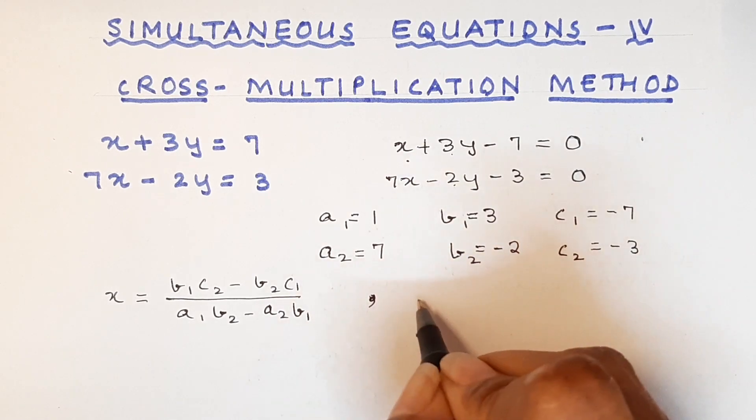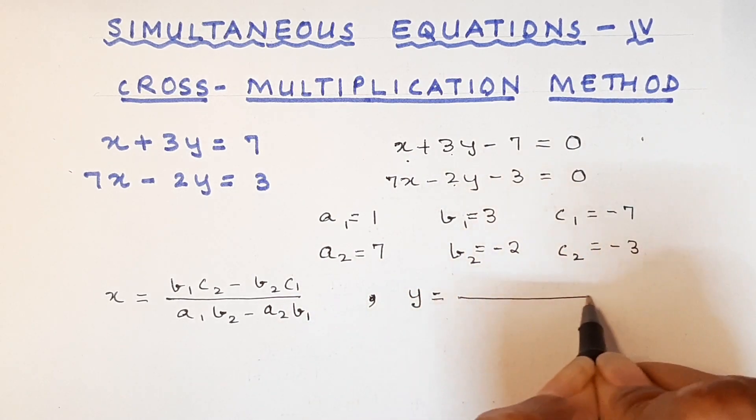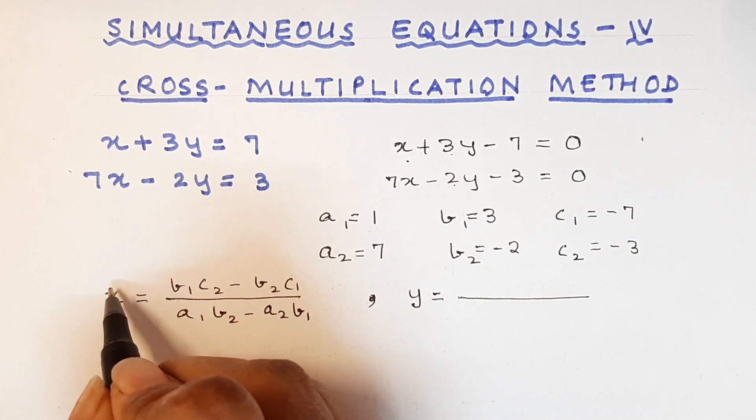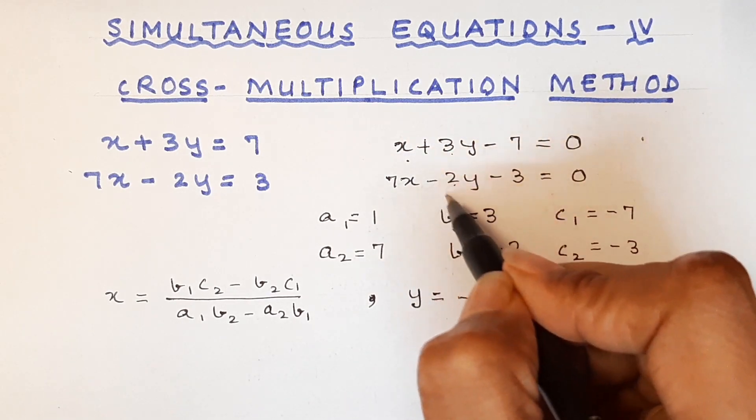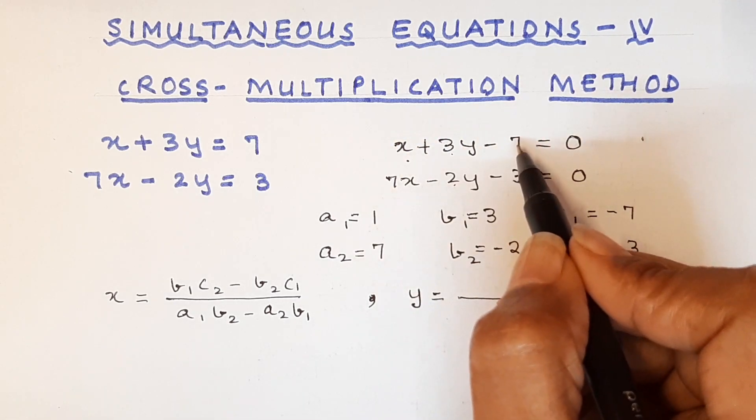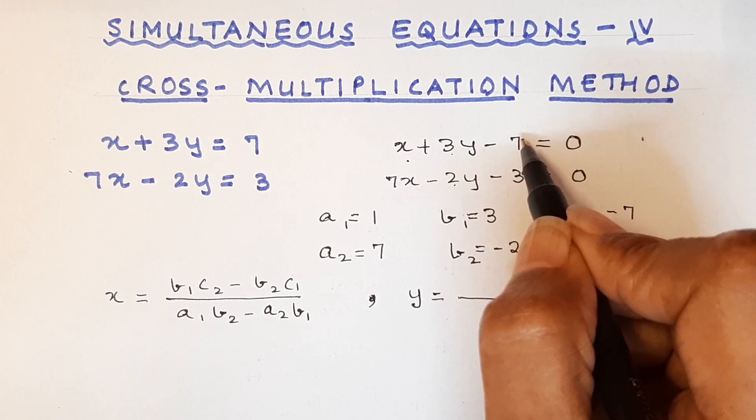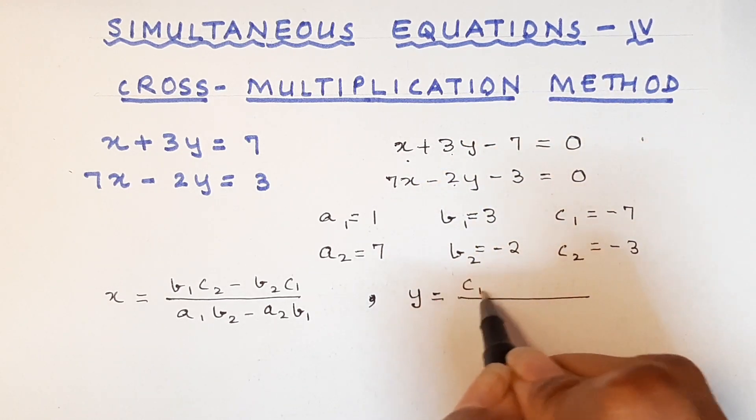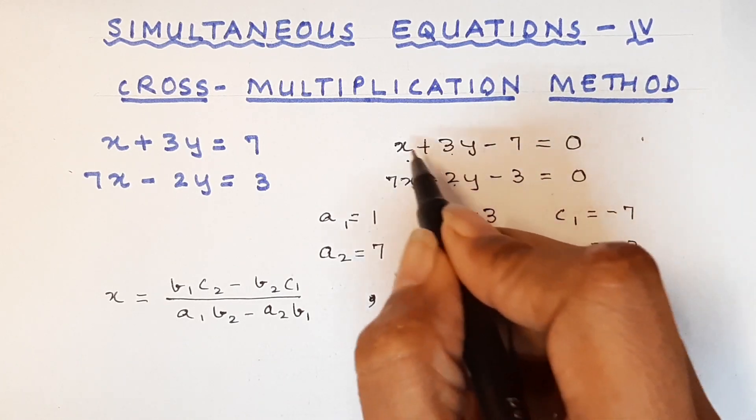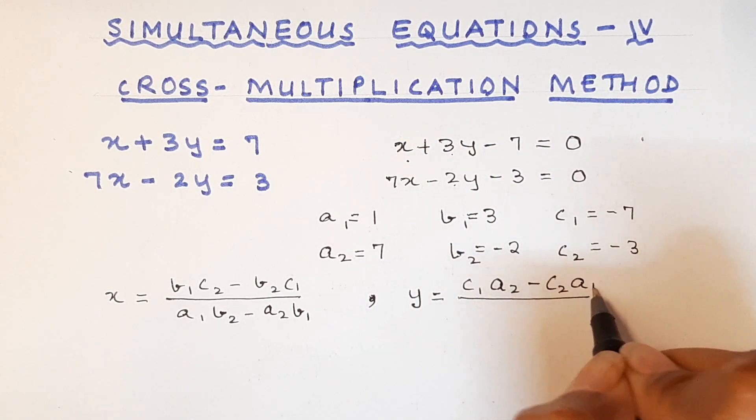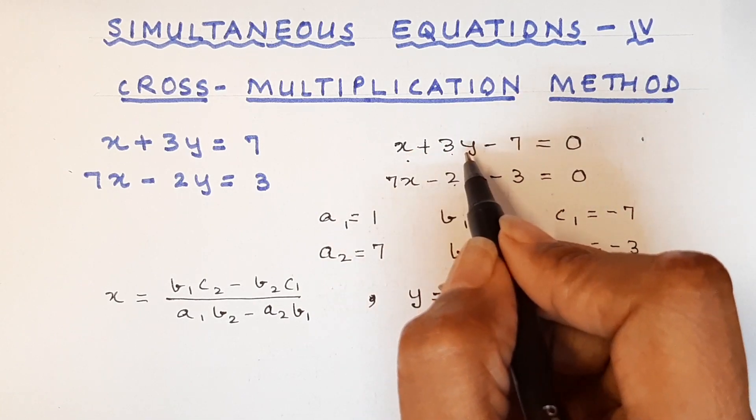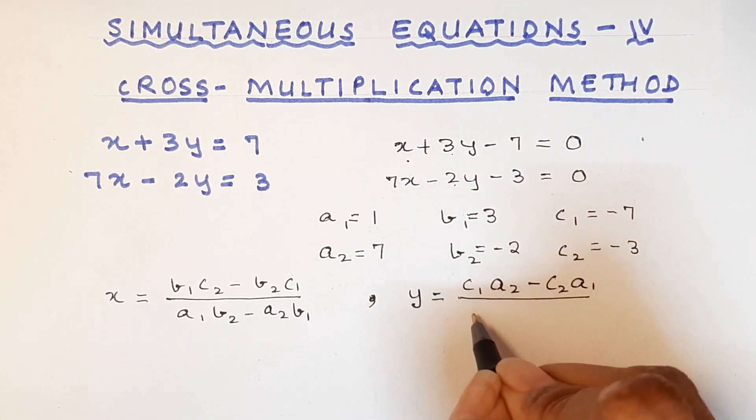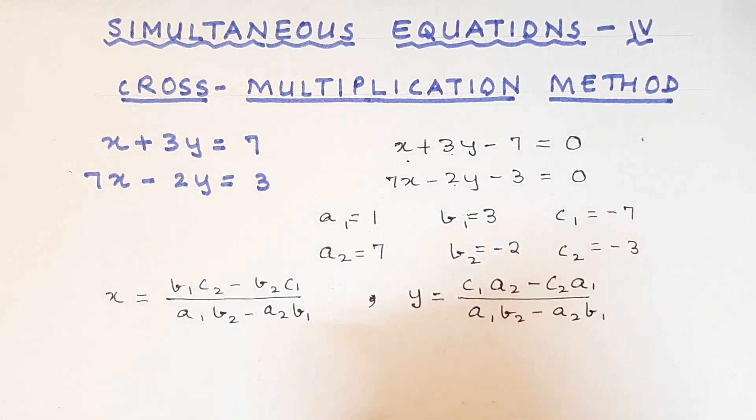Getting it? Now let us see if we can get the formula of y. If I took x, I did not take the x coefficient. So when I take y, I will not take the coefficients of y, but I will take a and c. So we will take c1a2 minus c2a1. Denominator remains the same. So denominator is a and b, which means you will take x and y coefficient and it will be crisscross like that. So it will be a1b2 minus a2b1.